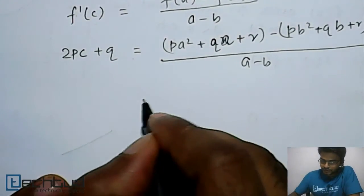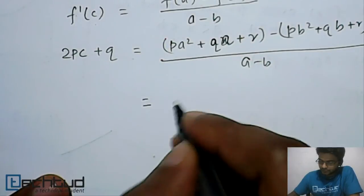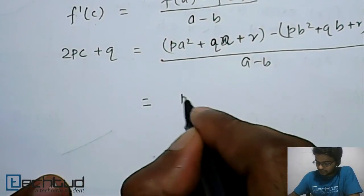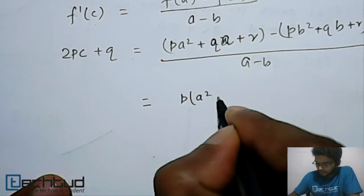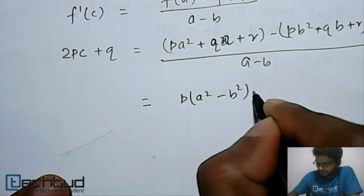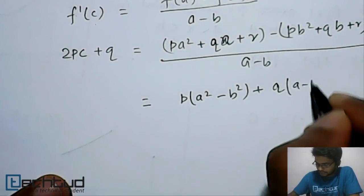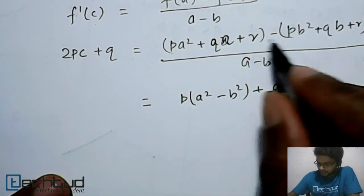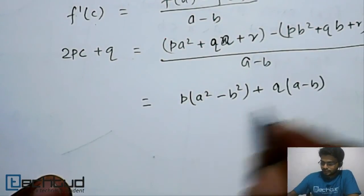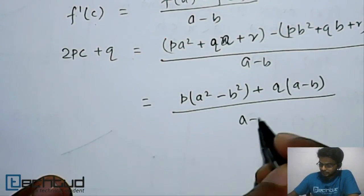Now, once we solve this, it will become—let's take p common, so p(a² - b²). Let's take q common, so (a - b), and this r minus r will be cancelled out, upon (a - b).